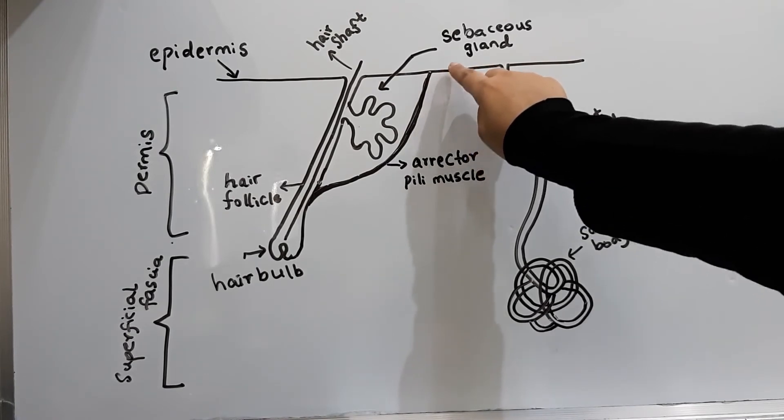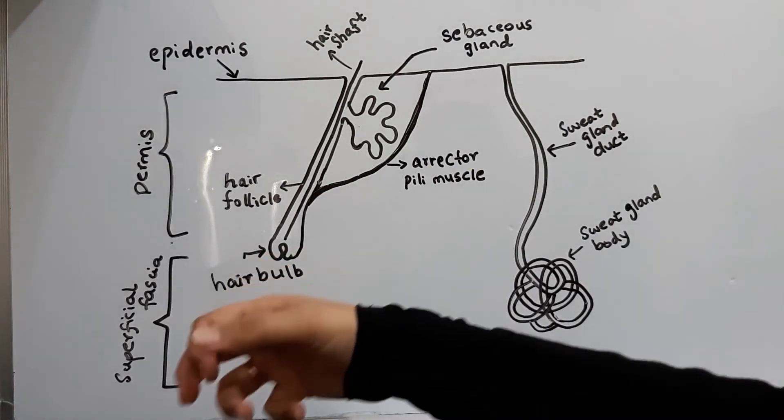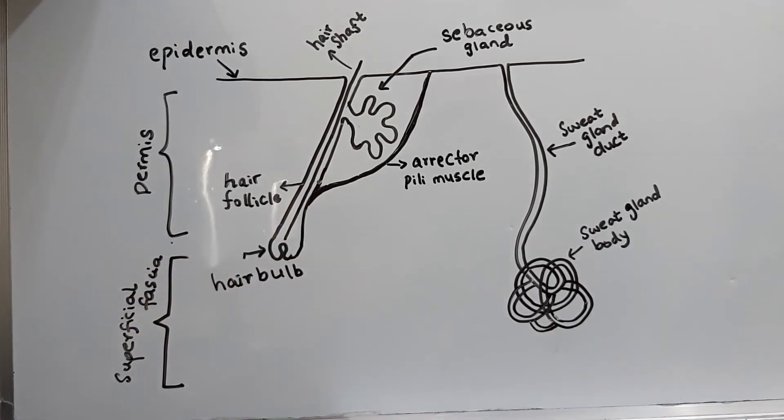And its function is to contract the hair follicle when the sympathetic nervous system is activated. In my following video, I will be discussing how the contraction of this muscle leads to the formation of goose flesh on human skin.